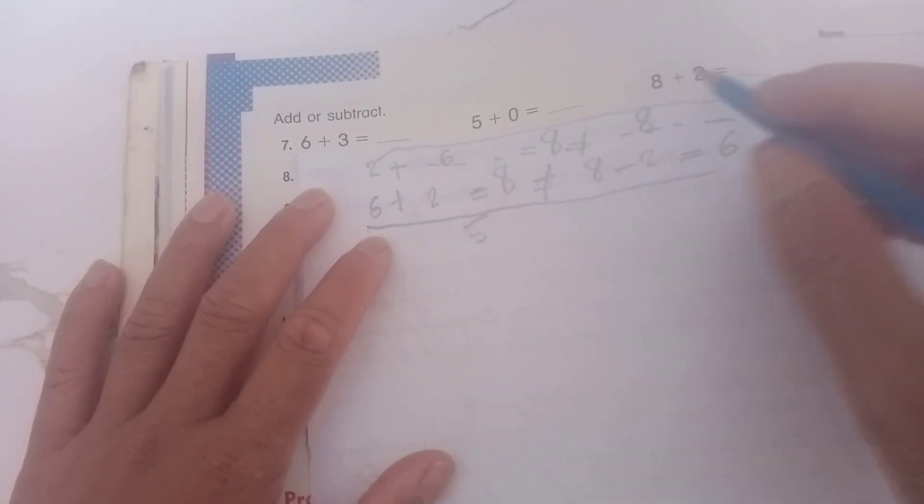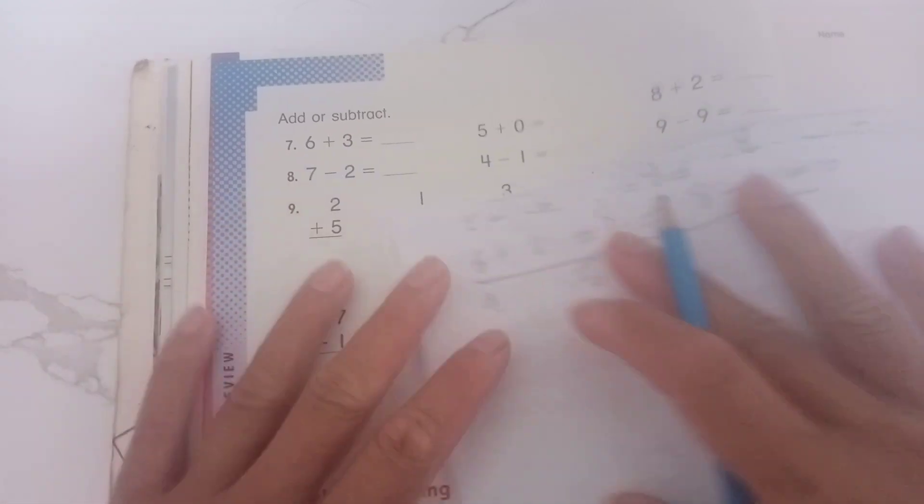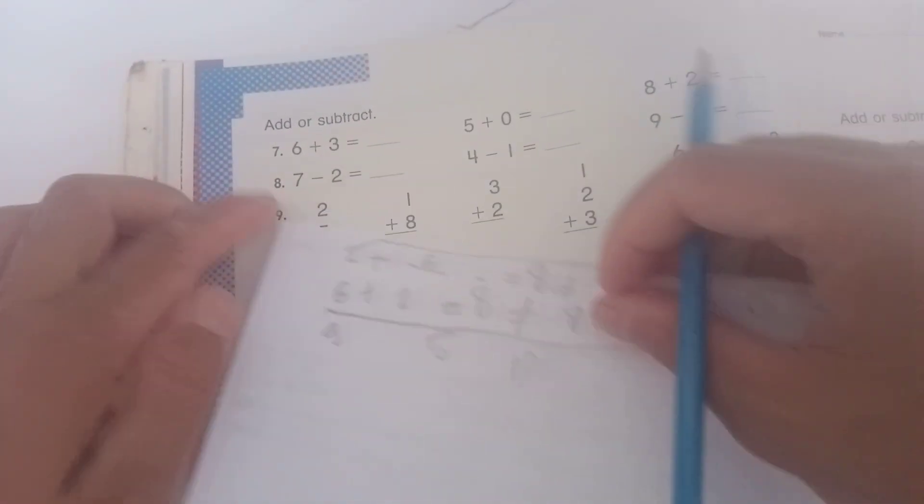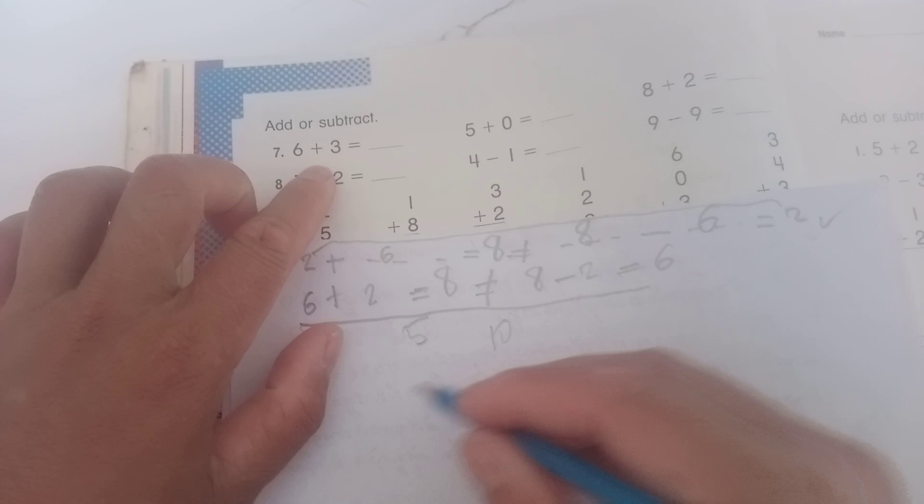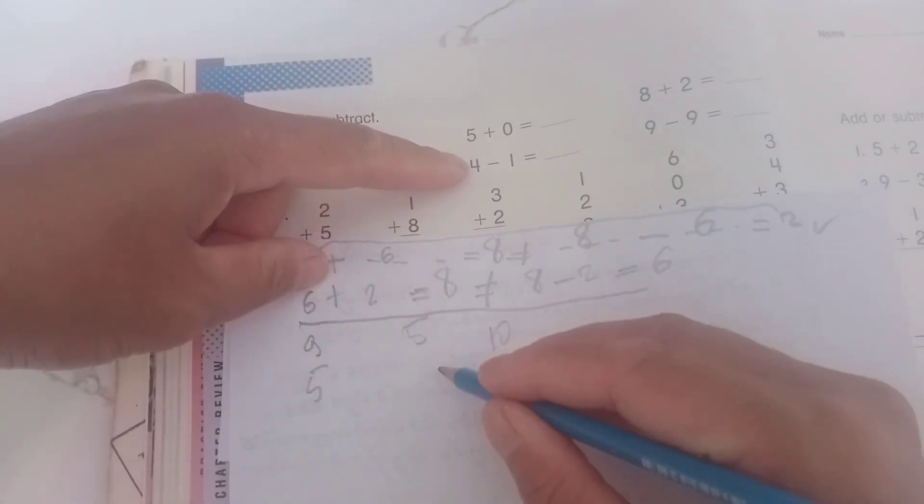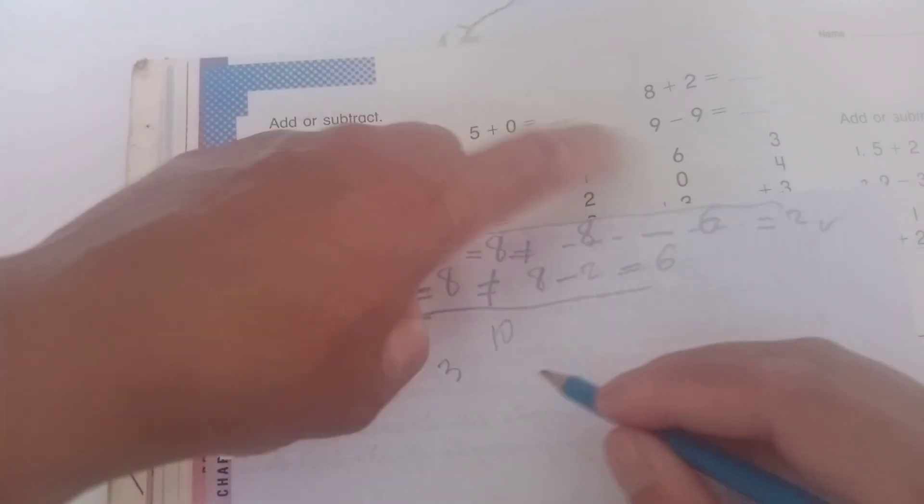Eight plus two equals ten. Seven minus two equals five, four minus one equals three, nine minus nine equals zero. Now you can see number nine exercise.